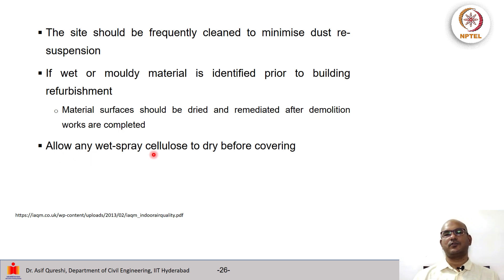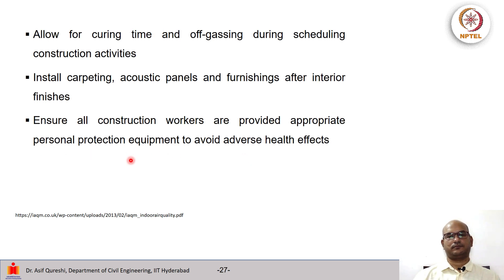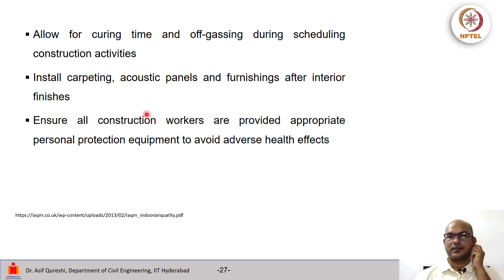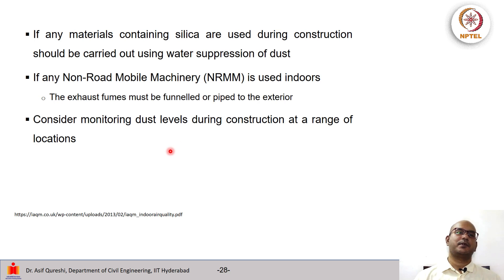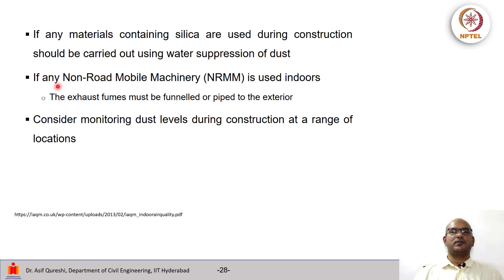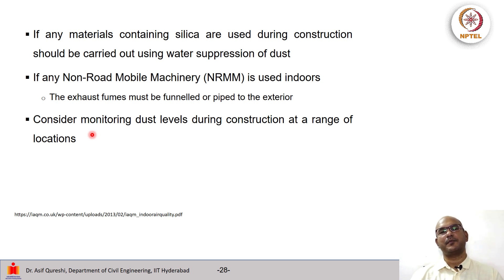One should allow any wet stressed cellulose to dry before covering, and allow for curing time and off-gassing during scheduled construction activities. One can install carpets, acoustic panels and furnishings after the interior has been finished. All construction workers should be provided appropriate personal protective equipment to avoid adverse health effects. If any material containing silica is used during construction, its removal should be carried out using water suppression of dust. If there is any non-road mobile machinery indoors, the exhaust fumes must be funneled or piped to the exterior. One should also consider monitoring dust levels during construction at many different locations.